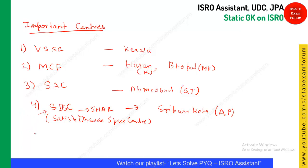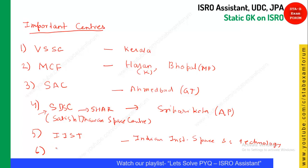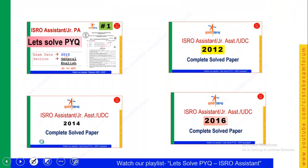IIST stands for Indian Institute of Space Science and Technology — a question that has appeared in previous years. TERLS stands for Thumba Equatorial Rocket Launching Station, which is important because it is located near the magnetic equatorial line.